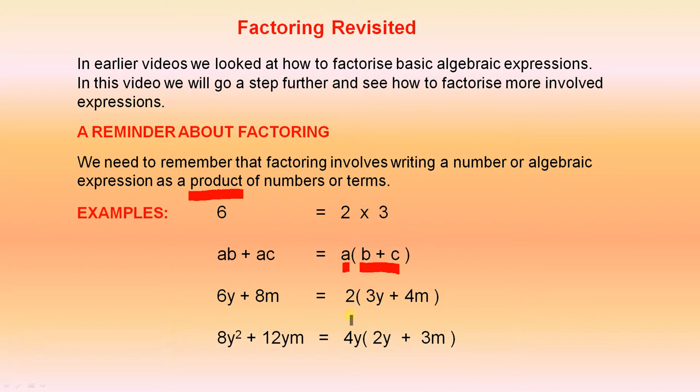6y plus 8m is the product of 2 and 3y plus 4m. This 2, for example, is the highest common factor of 6 and 8. That's why we write it there.